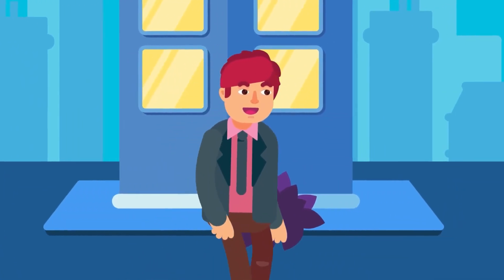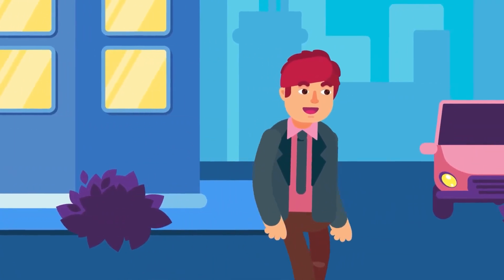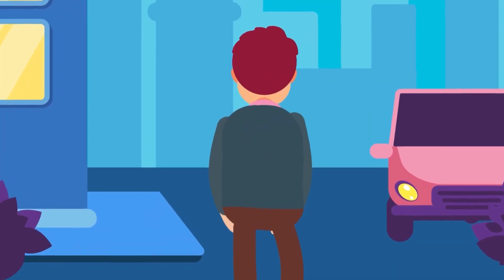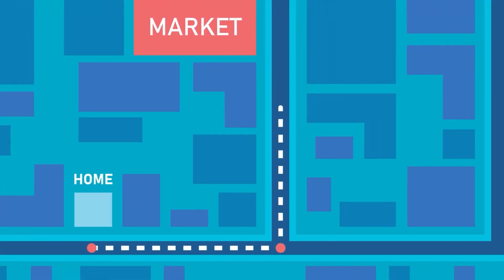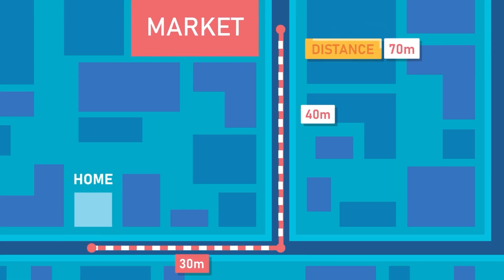Imagine we're going to the market by walking 30 meters straight, and then take a left turn for another 40 meters walk. The total length of path traveled can be defined as distance. And in this case, 70 meters is the distance from our home to the market. Now, what is displacement? Displacement is the shortest distance from our home to the market.